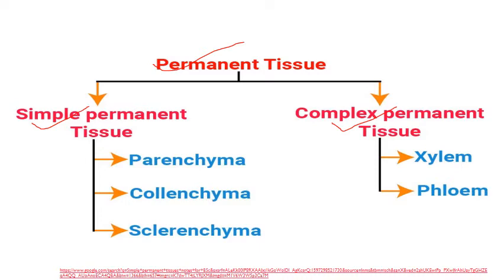Simple permanent tissue — as the name indicates, it is made up of the same kind of cells to perform a particular function. The different types that come under this are parenchyma, colenchyma, and sclerenchyma.